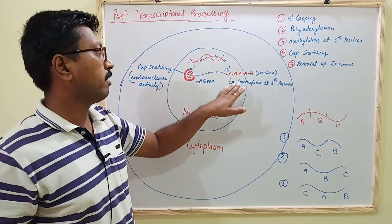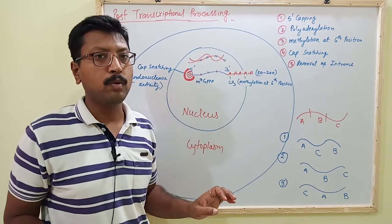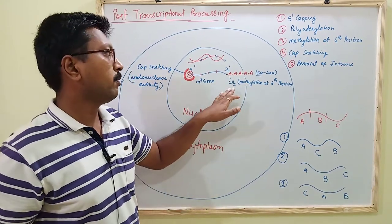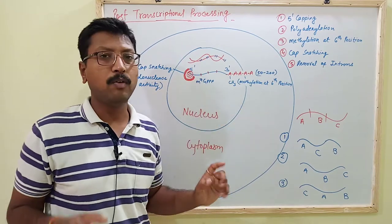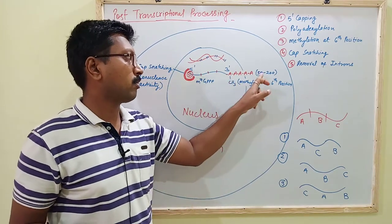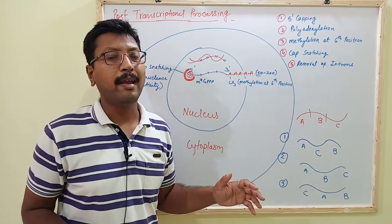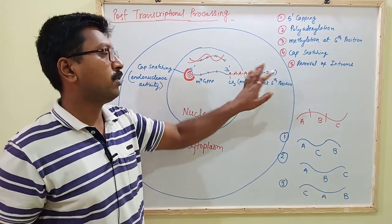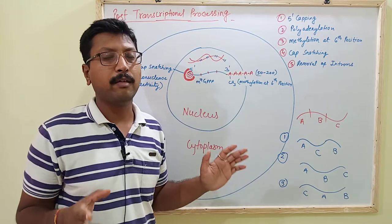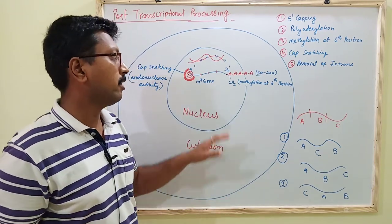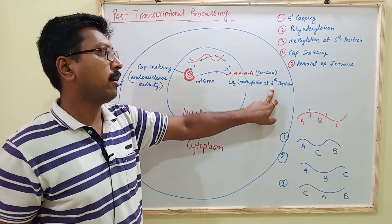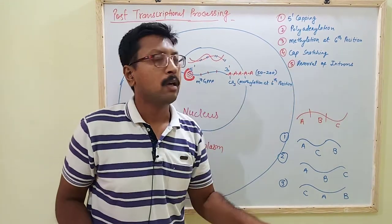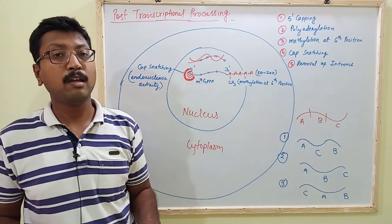Now the third modification is methylation at the sixth position. The methylation of the adenylate residue at the sixth position is done, and this methylation affects only about one percent of the 50 to 200 adenylate residues. So only one percent of these residues get methylated at the sixth position.